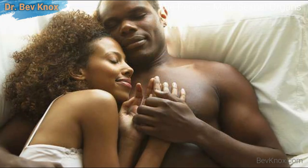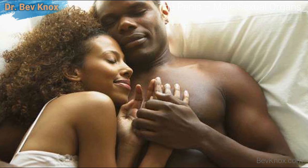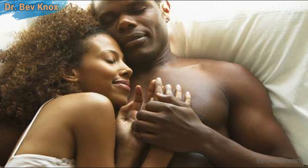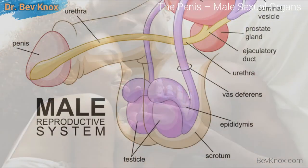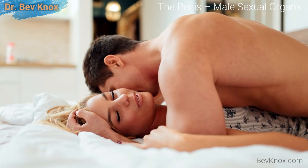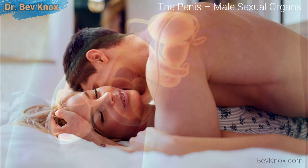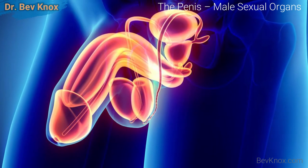In regards to the male sexual organs, externally the most noticeable parts of the male sexual anatomy are the penis and the scrotum, or scrotal sac, which contains the testes. In my next lecture, we will talk about the female sexual organs and the different parts.